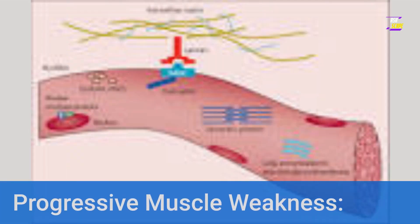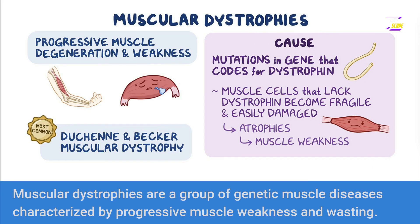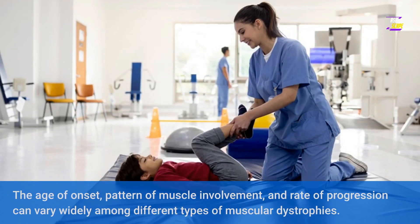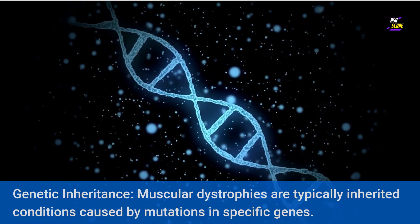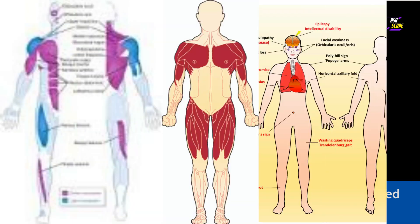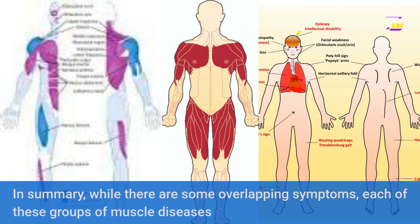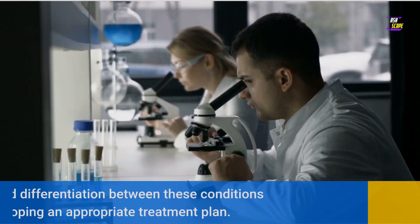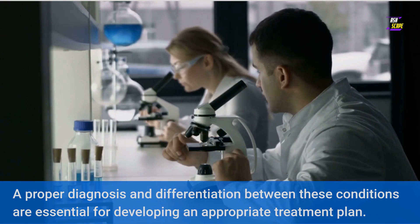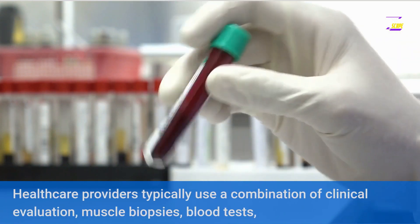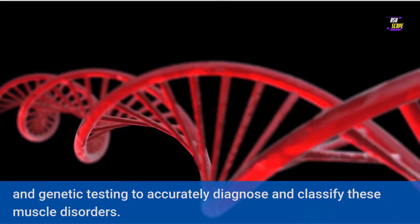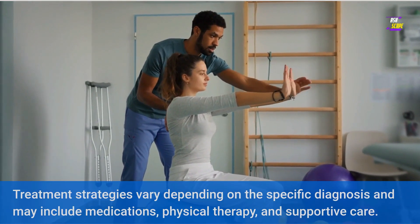4. Muscular Dystrophies: Muscular dystrophies are a group of genetic muscle diseases characterized by progressive muscle weakness and wasting. The age of onset, pattern of muscle involvement, and rate of progression can vary widely among different types. Muscular dystrophies are typically inherited conditions caused by mutations in specific genes. In summary, while there are some overlapping symptoms, each of these groups of muscle diseases has distinct clinical features, underlying causes, and treatment approaches. Healthcare providers use a combination of clinical evaluation, muscle biopsies, blood tests, and genetic testing to accurately diagnose and classify these muscle disorders.